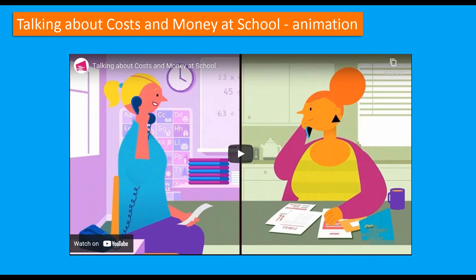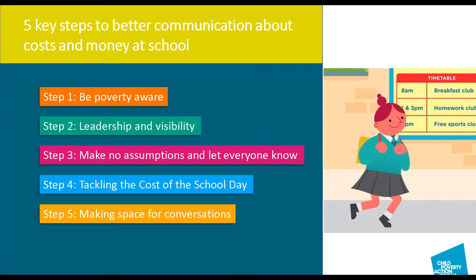The five main areas from parents' perspectives are: poverty awareness; leadership and visibility; making no assumptions and letting everyone know; tackling the cost of the school day; and making space for conversations. I'll give a quick summary of these — please do look at the resource afterwards as there's loads more detail, including case studies of schools getting communication right, a FISO case study, and a school from North Ayrshire.